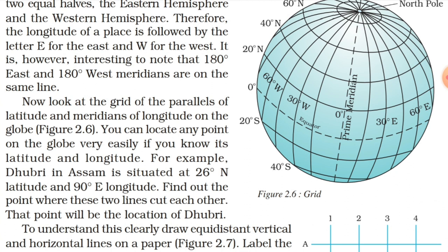Now look at the grid of parallels of latitude and meridians of longitude on the globe. You can locate any point on the globe very easily if you know its latitude and longitude. For example, Dhubri in Assam is situated on 26 degrees North latitude and 90 degrees East longitude. Find out the point where these two lines cut each other and that will be the location of the place.